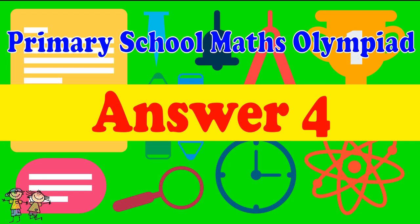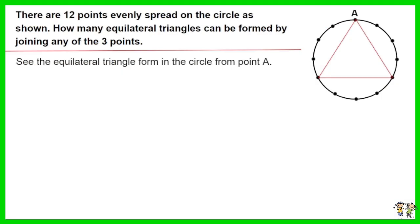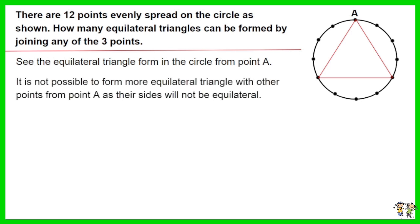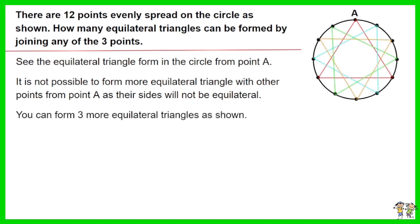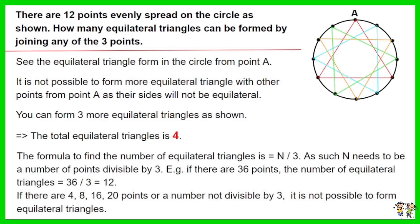Answer for Question 4. See the equilateral triangle formed in the circle from point A. It is not possible to form more equilateral triangles with other points from point A, as their sides will not be equilateral. You can form 3 more equilateral triangles as shown. Thus the total number of equilateral triangles is 4. The formula to find the number of equilateral triangles is n divided by 3. As such, n needs to be a number of points divisible by 3.